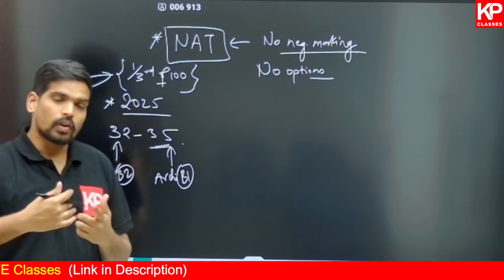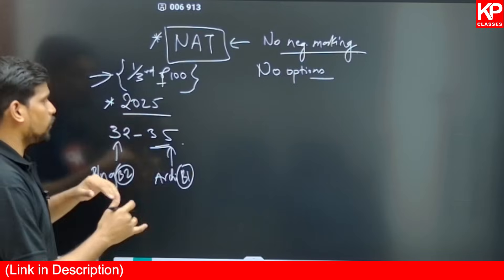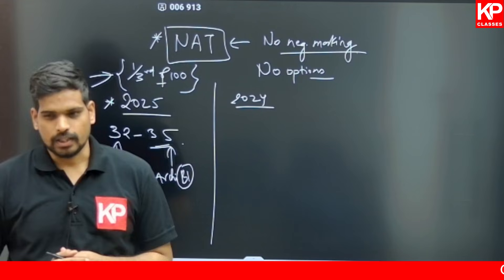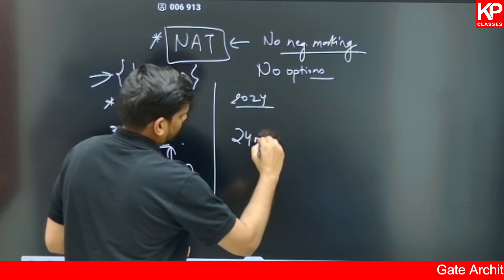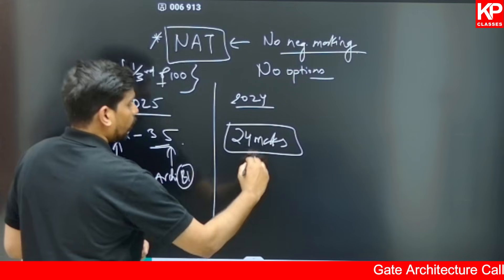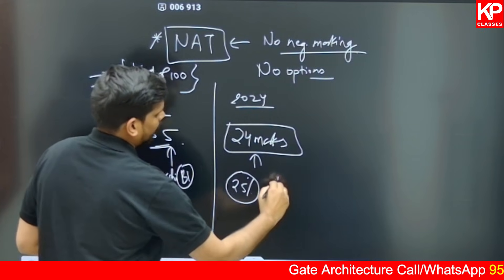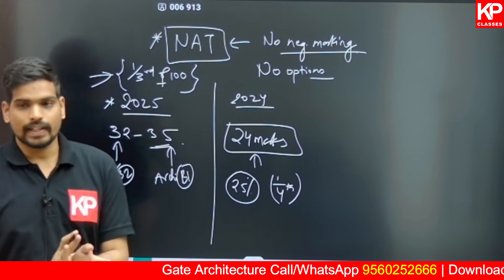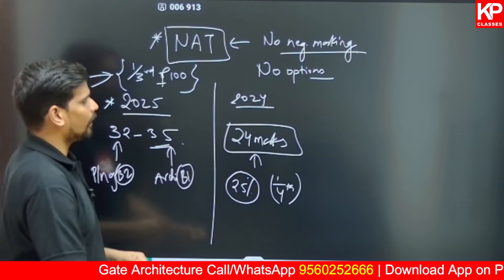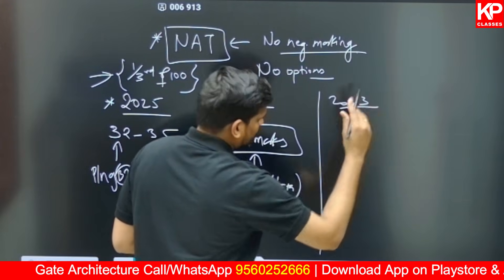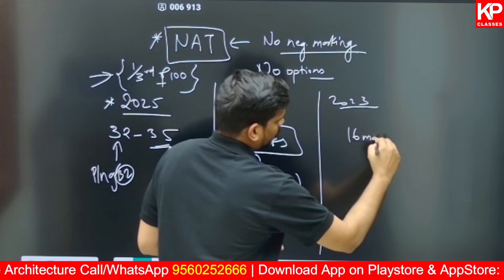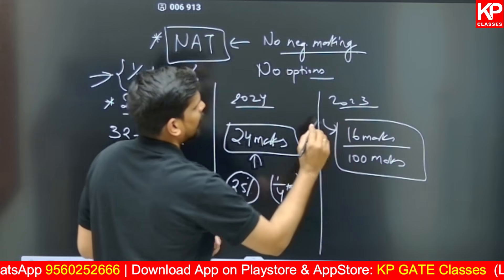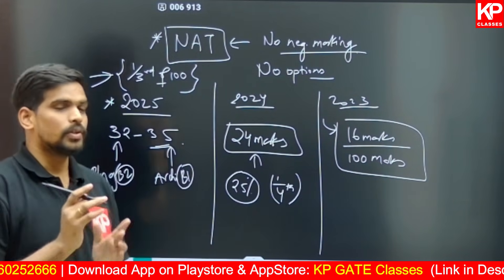Is it always one third? Not necessarily. In the 2024 paper, only one fourth of the question paper — approximately 24 marks — came from numericals. In 2023, it was even less: only 16 marks out of 100, which is almost equal to the weightage of General Aptitude.